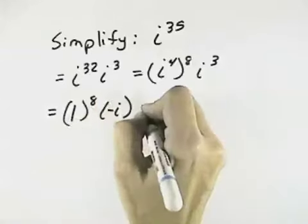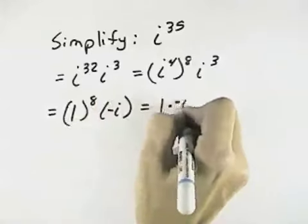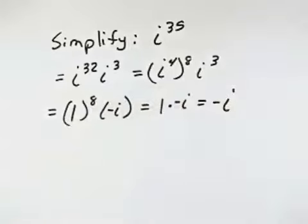1 to the 8th is just 1, so you have 1 times negative i, which is just negative i. So i to the 35th reduces to negative i.